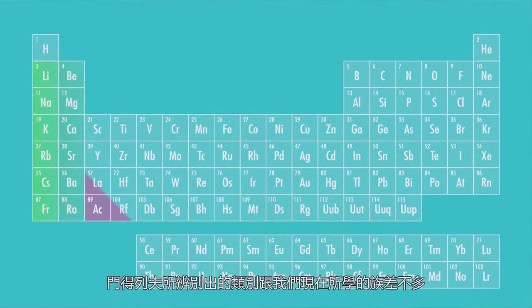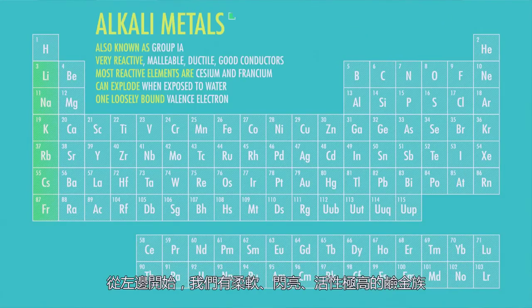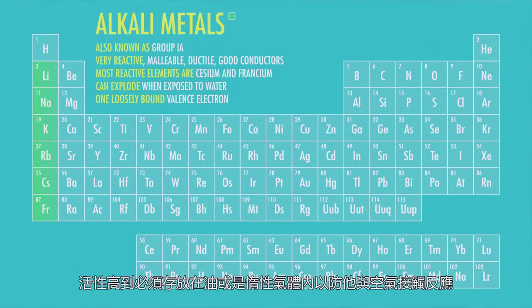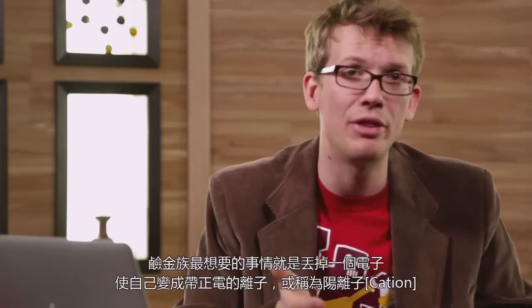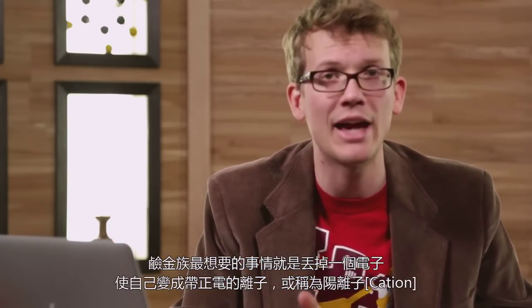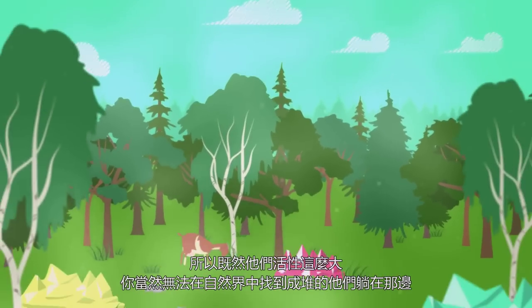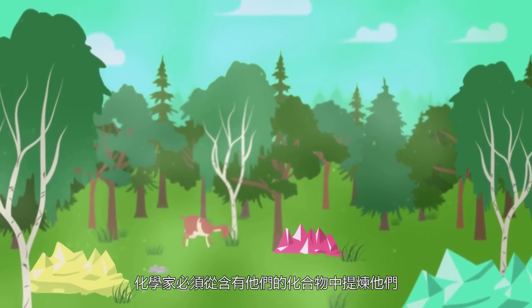The different groups Mendeleev had identified are a lot of the same groups that we study today. Starting at the left, we have the soft, shiny, extremely reactive alkali metals — so reactive, in fact, that they have to be stored in inert gases or oil to prevent them from reacting with the atmosphere. Alkali metals want nothing more than to dump off an electron and form a positive ion or cation, and they're always jonesing to hook up with a hottie from the other side of the table. So, of course, seeing as they're so reactive, you don't find hunks of them lying around in nature. Instead, chemists must extract them from compounds containing them.